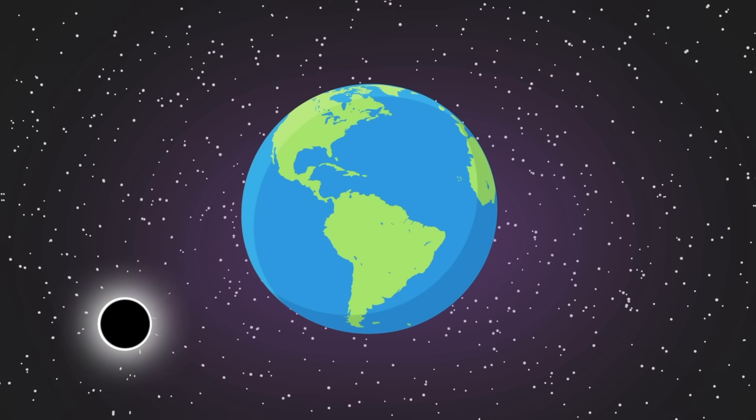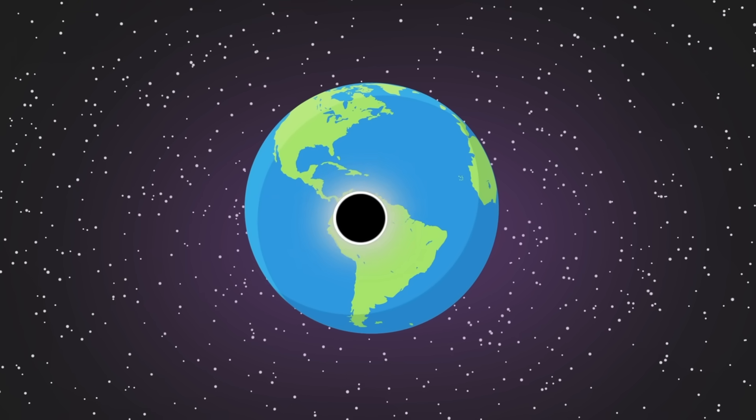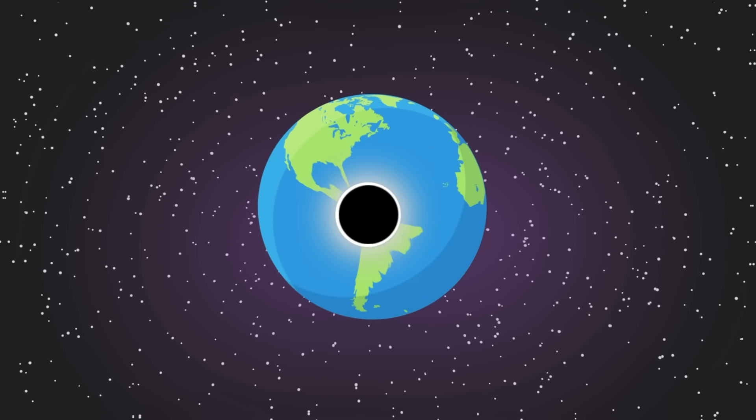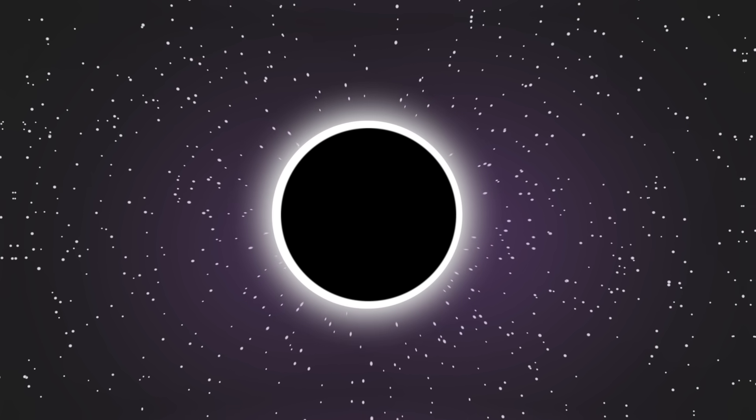The earth being struck by a black hole would be catastrophic, as the hole itself would grow in size the more mass it consumed. This in turn would increase its own gravitational pull, sucking in even more material.